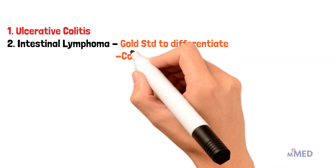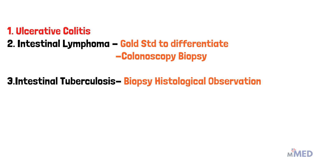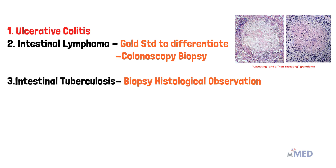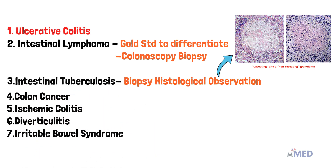The differential diagnoses of Crohn's disease include ulcerative colitis, intestinal lymphoma (differentiated by colonoscopy biopsy as the gold standard), and intestinal tuberculosis — distinguished by caseating granulomas in TB versus non-caseating granulomas in Crohn's disease on biopsy. Other differentials include colon cancer, ischemic colitis, diverticulitis, and irritable bowel syndrome.